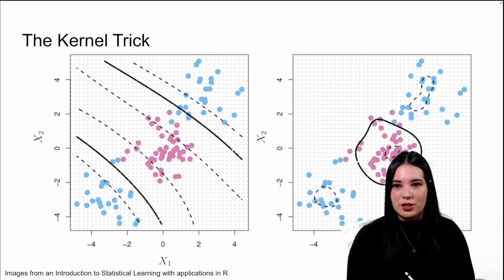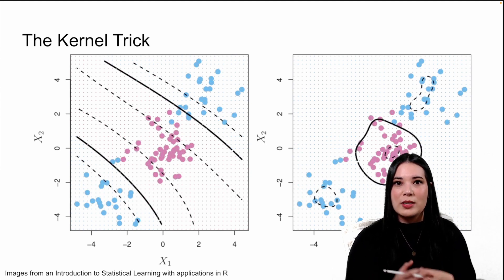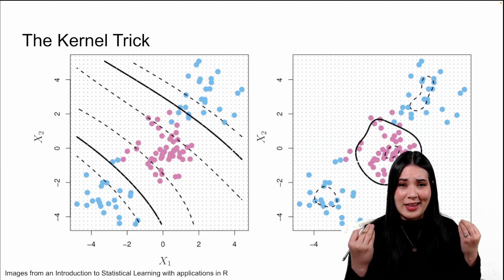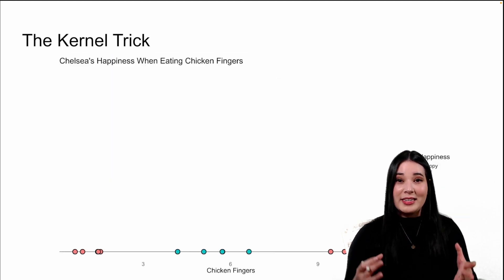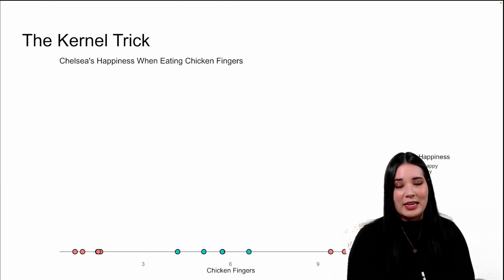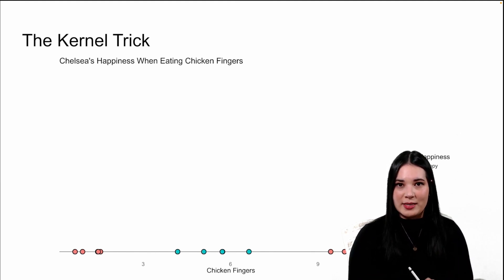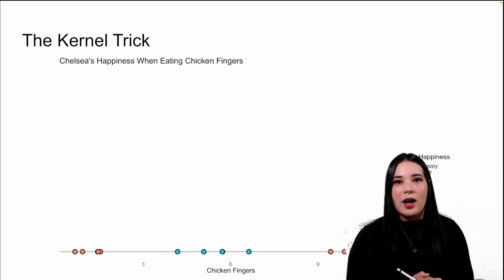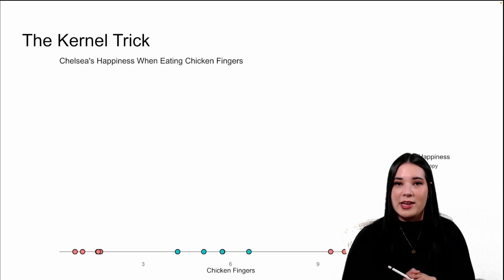You can see in these pictures that these are the types of classification boundaries that we would really like to draw, but we just can't with a regular support vector classifier. Let's take a step back so I can show you what the kernel trick is by example. Let's take this very simple data set that represents my happiness or unhappiness with regards to how many chicken fingers I eat.